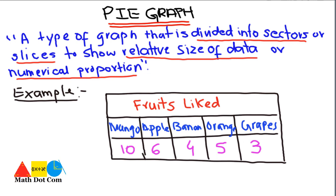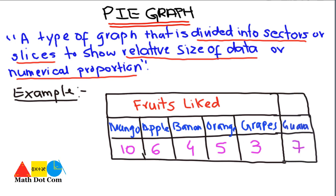One more food we can add here is guava — 7 people said they like guava. So this is the table you have made based on your survey to find out how many people like which food. You can show this data on a pie chart.